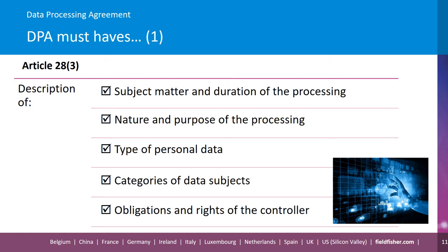So what has to be in a data processing agreement exactly under Article 28? These have to contain the subject matter and duration of the processing, the nature and purpose of the processing, the type of personal data, categories of data subjects and obligations and rights of the controller. So it will be common to have perhaps a schedule or an appendix which will explain the relationship of the parties and what the processor is being engaged for. In terms of types of personal data and data subjects, it will be things like names, addresses, images, medical records, etc. And data subjects could be employees, customers, website users and so on.